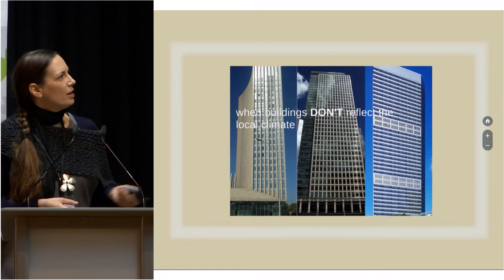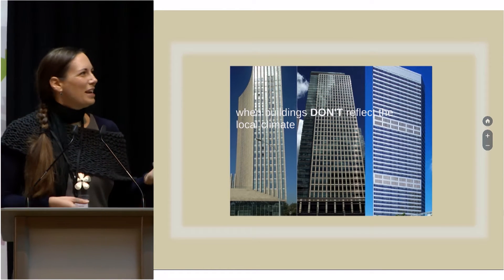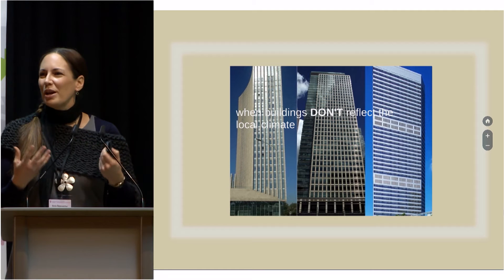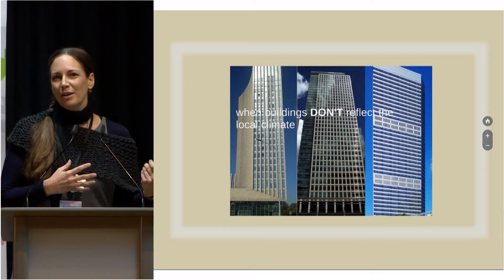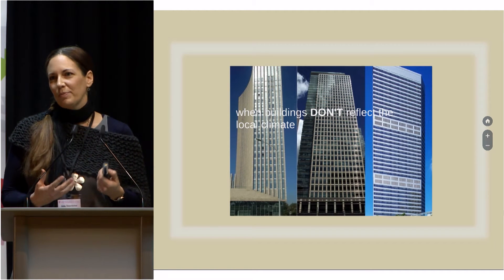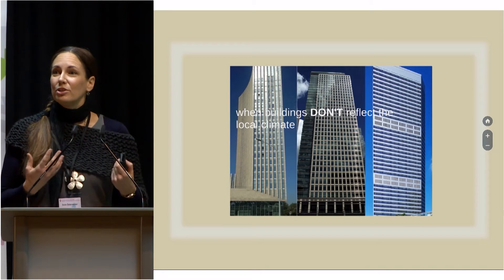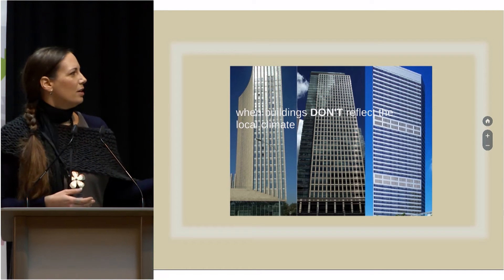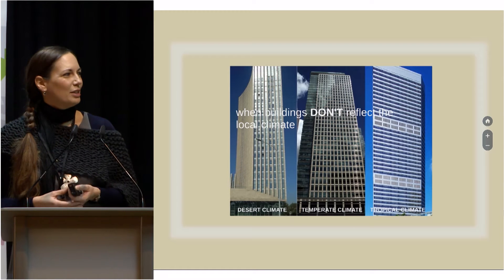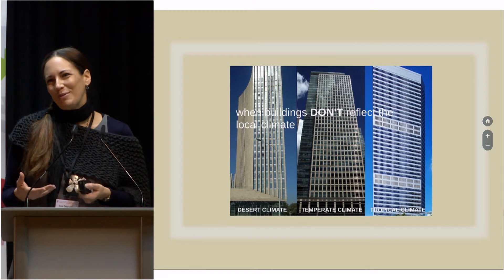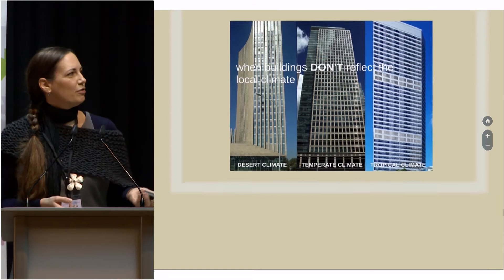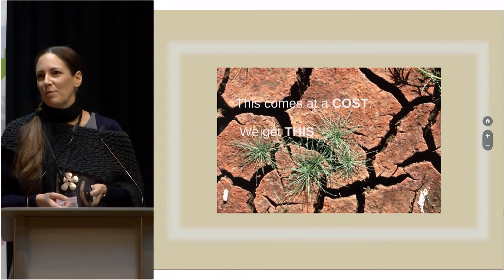What are we doing now? We're building something like this — it's a bit cynical, I know. At the end of the day, you probably wouldn't know where these buildings are located unless you've been there. We don't really build anymore according to the climate; we build the same everywhere. One building is in a desert climate in Addis Ababa, another is in London in the UK, and the third is in Singapore in a tropical climate — and they're interchangeable. So first of all, we need to look at climate and energy efficiency of buildings. If we don't do this, we get climate change.